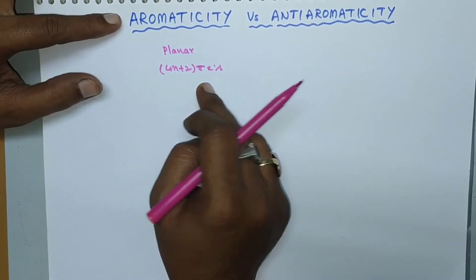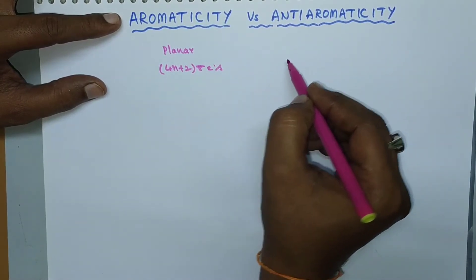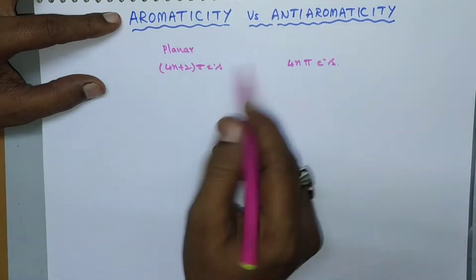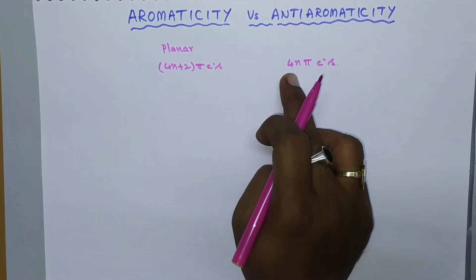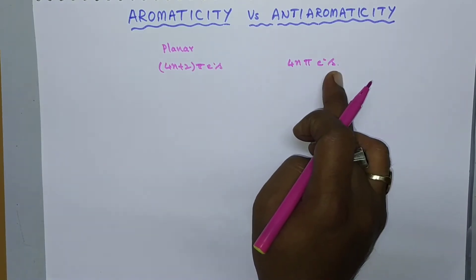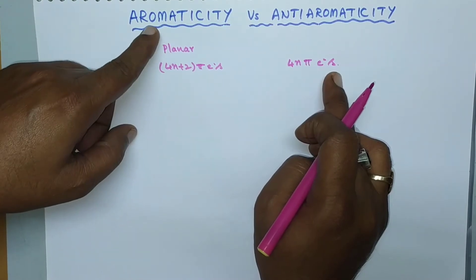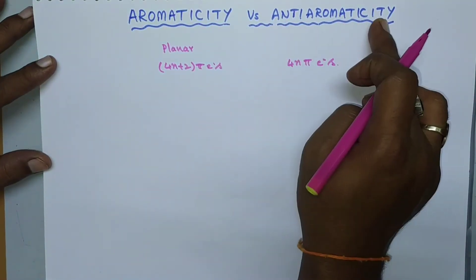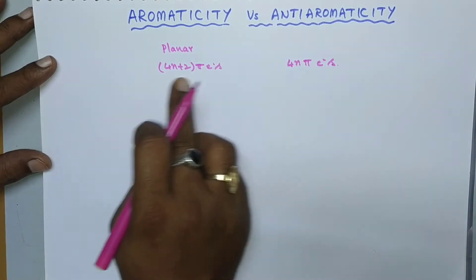Anti-aromatic compounds must also be planar, but they consist of 4n π electrons only. So if a molecule consists of 4n+2 π electrons it is called an aromatic compound; if it consists of 4n π electrons it is said to be anti-aromatic.